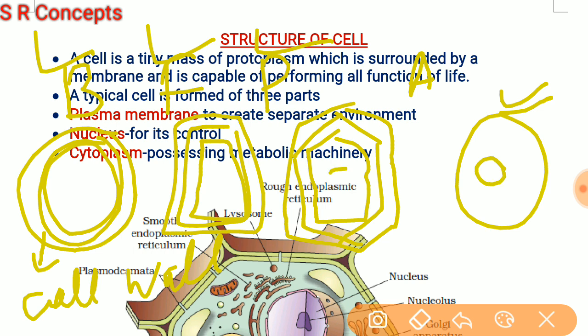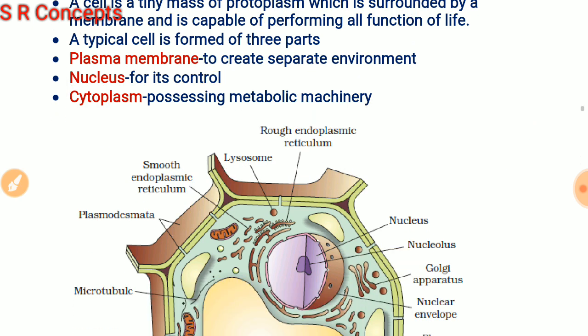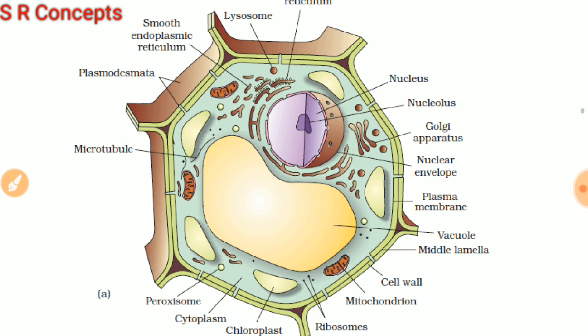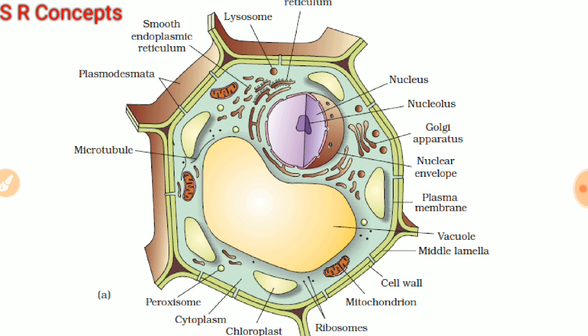All cells have a nucleus inside them. The nucleus controls the different activities of the cell. Now there is cytoplasm — whatever material is present between the plasma membrane and the nucleus is known as cytoplasm. So cytoplasm is the material excluding the plasma membrane and the nucleus.